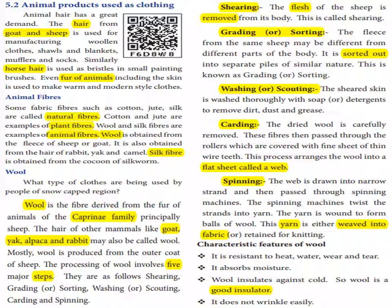First, shearing. The fleece of the sheep is removed from its body. This is called shearing — similar to shaving. The fur is removed from the fleece.